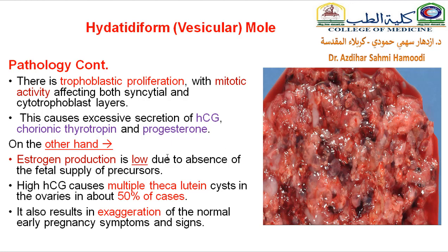There will be increased secretion of beta-hCG, chorionic thyrotropin, and progesterone, while estrogen production will decrease. Because of high beta-hCG, there will be stimulation of the ovaries and multiple cystic formation — what we call theca lutein cysts in 50% of cases. Because of high pregnancy hormones, there will be exaggeration in the signs and symptoms of pregnancy.